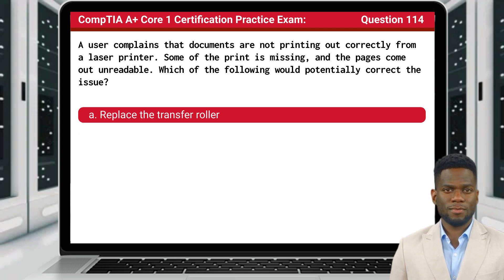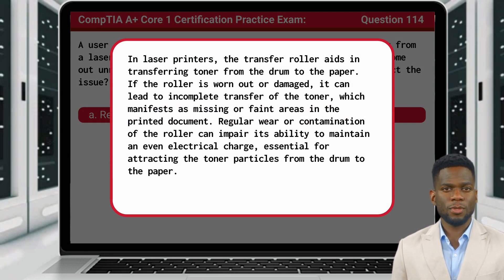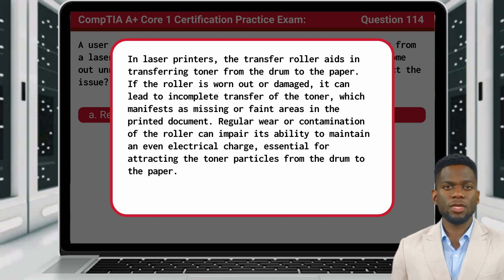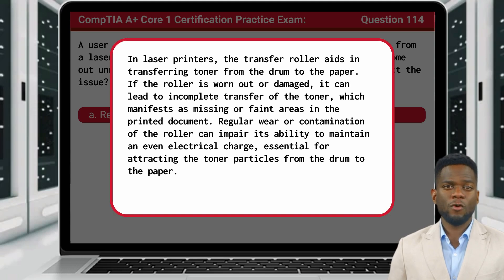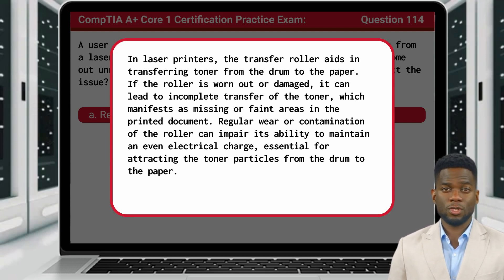The answer is A: replace the transfer roller. In laser printers, the transfer roller aids in transferring toner from the drum to the paper. If the roller is worn out or damaged, it can lead to incomplete transfer of the toner, which manifests as missing or faint areas in the printed document. Regular wear or contamination of the roller can impair its ability to maintain an even electrical charge, essential for attracting the toner particles from the drum to the paper.